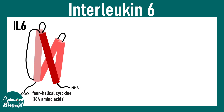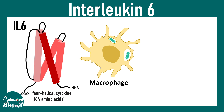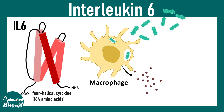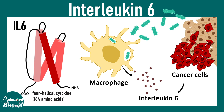In this short video we'll be talking about interleukin-6, which is a hallmark pro-inflammatory cytokine. It has a four-helical structure, 184 amino acids to be precise, and it is secreted by cells like macrophages. Upon bacterial infection these cytokines could be secreted. Also, cancer cells are known to secrete interleukin-6.